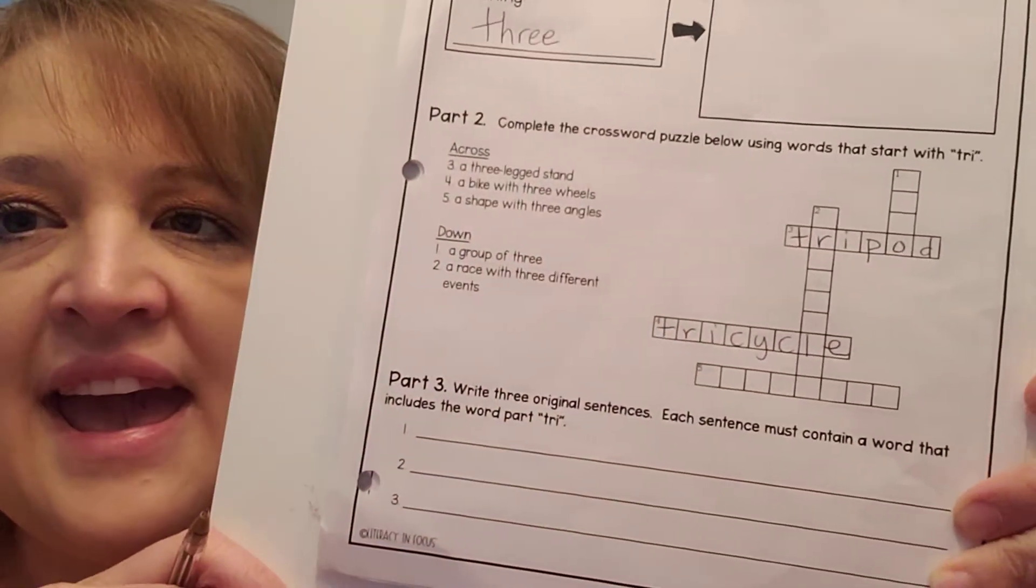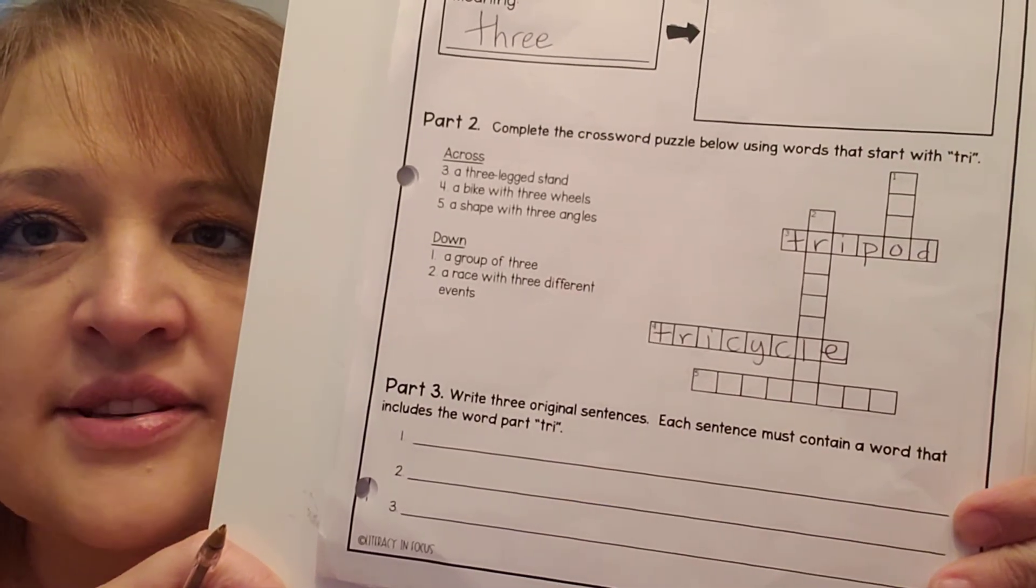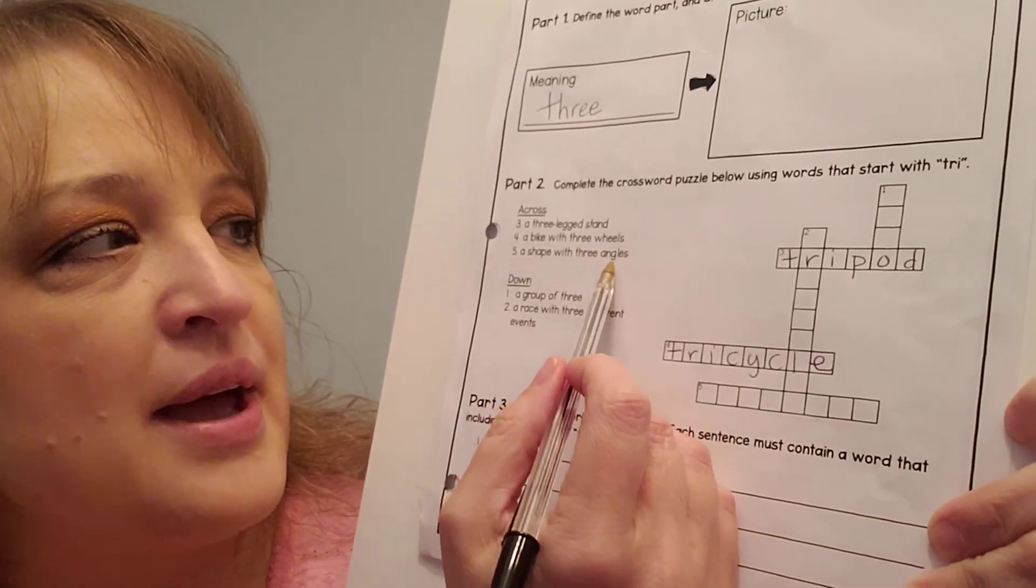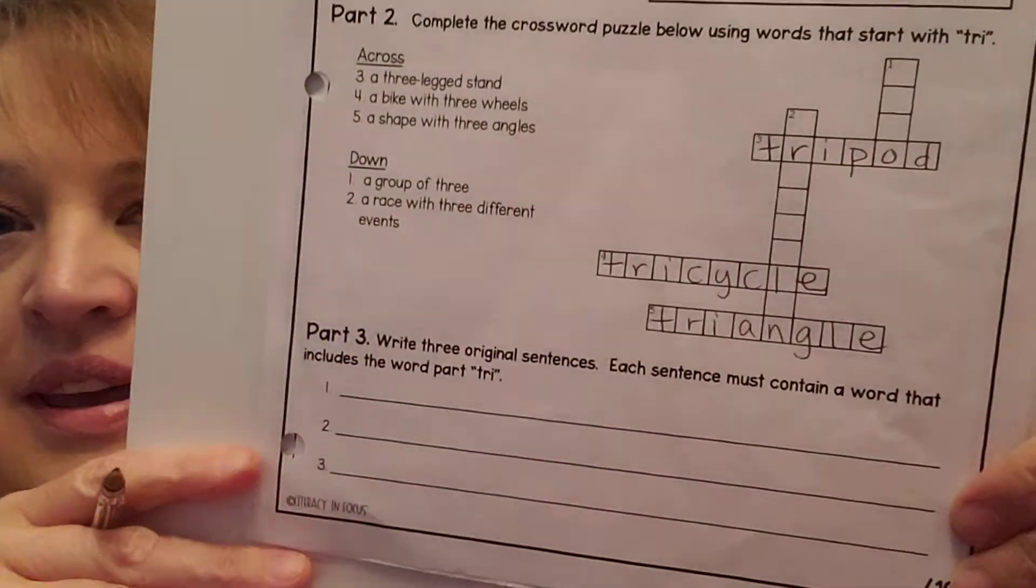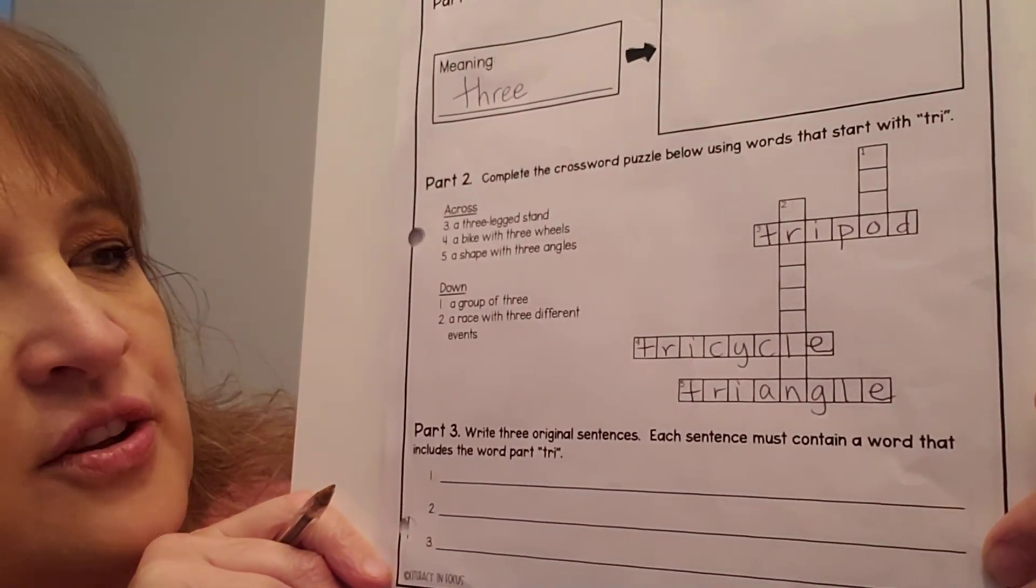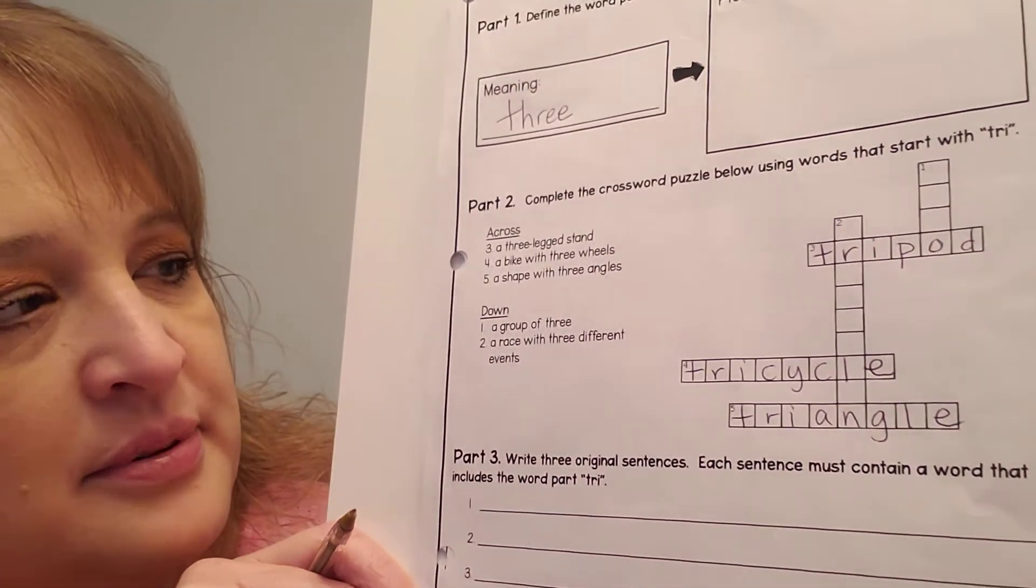All right, five across. A shape with three angles. Oh, we did a lot of this before we left school, didn't we? It's a tri what? A shape with three angles. Here's the word angles. Three means tri, so add it to angles. Triangle. That is a shape with three angles. So five across is triangle. Okay, so we have tripod, which is a three-legged stand. We have tricycle, which is a three-wheeled bike, and a triangle, which is a three-angled shape.